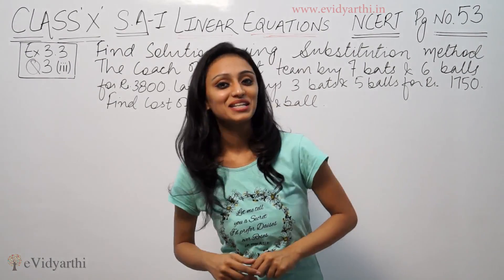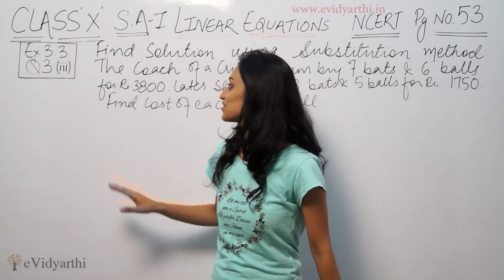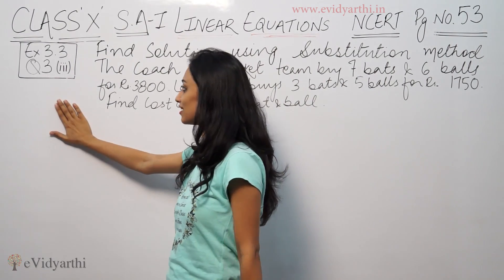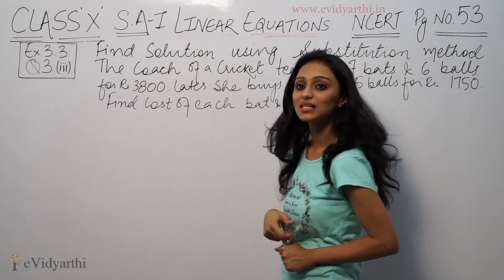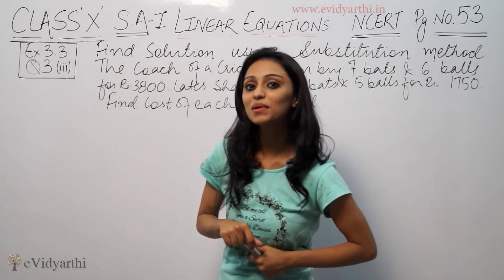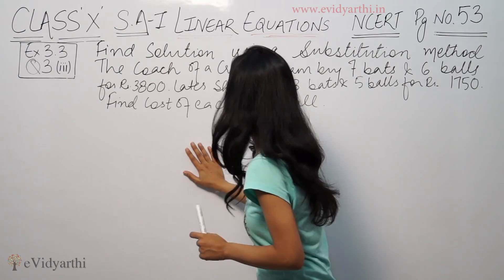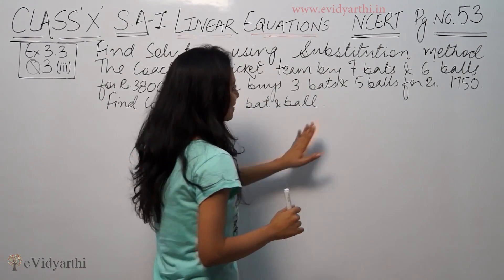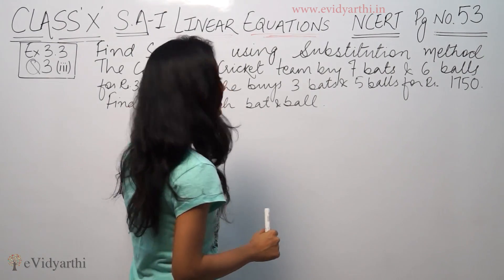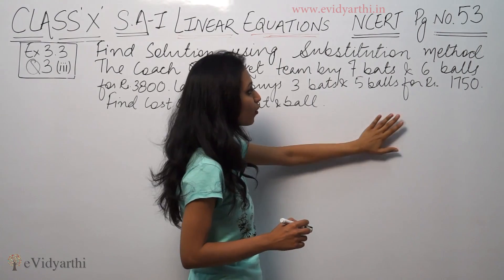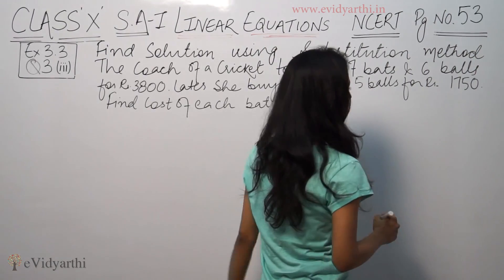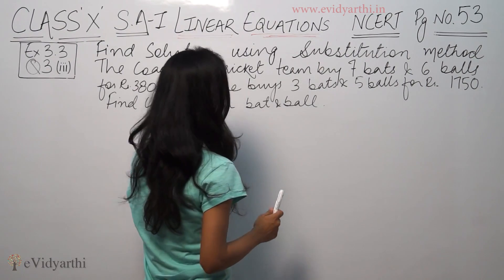So today we will do a mathematical problem related to cricket. This is question number 3 of exercise 3.3. It says find a solution using substitution method. The coach of a cricket team buys 7 bats and 6 balls for rupees 3800. Later she buys 3 bats and 5 balls for rupees 1750. Find cost of each bat and ball.